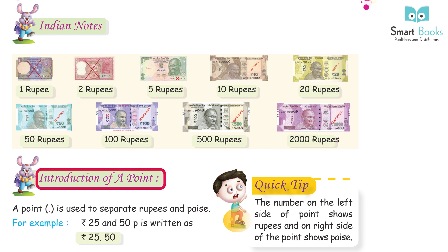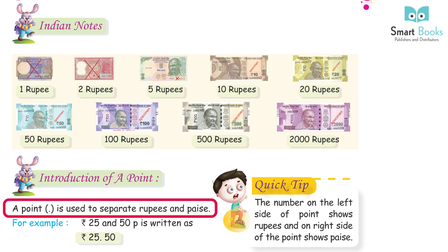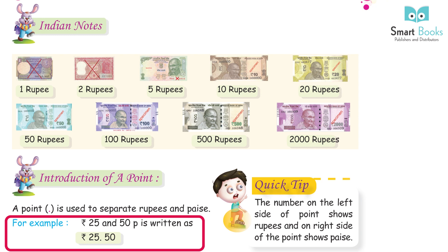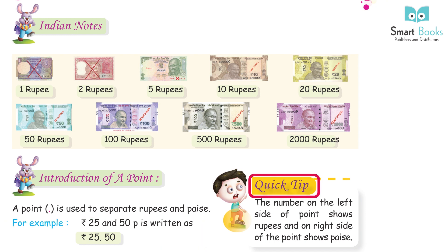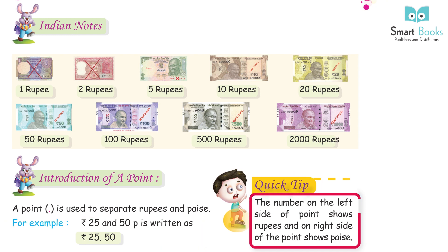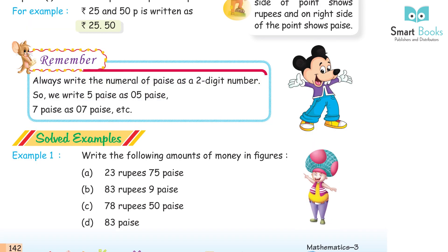Introduction of a point: a point is used to separate rupees and paise. For example, rupees 25 and 50 paise is written as 25.50. Quick tip: the number on the left side of the point shows rupees, and on the right side of the point shows paise.